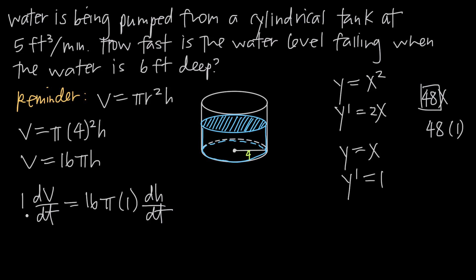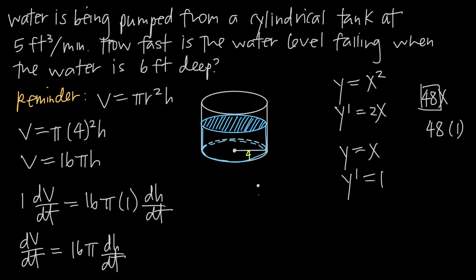Simplifying the equation: 1 × dV/dt is just dV/dt, and 16π × 1 gives us 16π × dh/dt. Now dV/dt represents how fast the volume is changing. We've been told water is being pumped out at 5 cubic feet per minute, so the volume is decreasing at 5 cubic feet per minute. That means dV/dt = -5 (negative because the volume is decreasing). Plugging in: -5 = 16π × dh/dt.